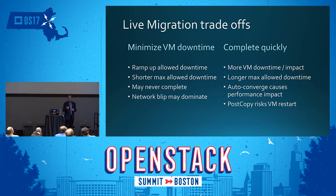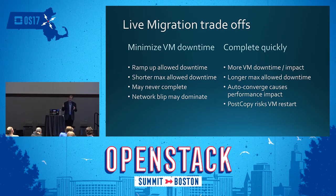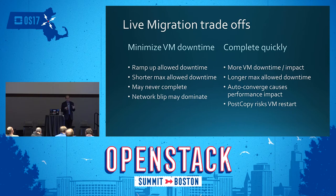Let's talk about how to make live migrate complete more quickly. There are some interesting features added recently. One is auto-converge — we throttle down the CPU and memory usage so that there's less dirtying to make the VM move quicker. QEMU throttles that down over time, throttling it more and more. This is a trade-off because there's a lowering in guest performance to allow that move to happen.